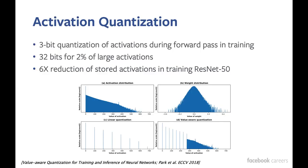We talked about quantization of the weights and improving training. But another side of the problem is activation. When you do inference, the initial activation size is actually pretty large. For a given image it might be something like 200 by 224 by 224. As you pass it through the network, the channel size gets larger, so activations actually represent a large portion of memory use. So how do you actually quantize the activations?